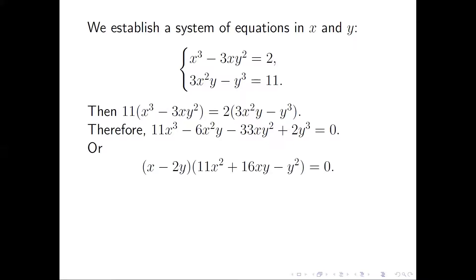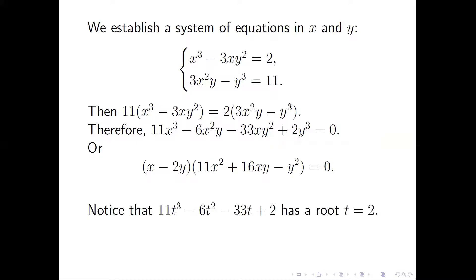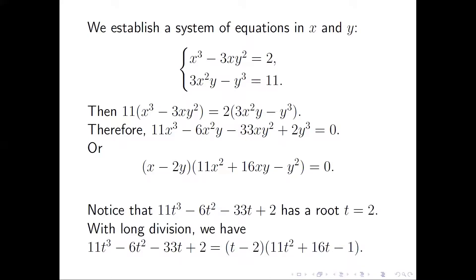Then we end up with a purely homogeneous equation. This polynomial can be factored as (x − 2y) times a quadratic polynomial. This factorization is similar to that of a single-variable cubic polynomial with the same coefficients. We see this single-variable polynomial has a root t = 2, and we can use long division to obtain the factorization. Compare the homogeneous polynomial with the single-variable polynomial and see their similarity.